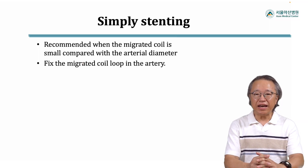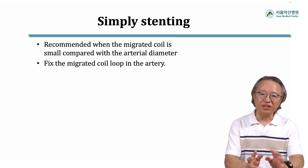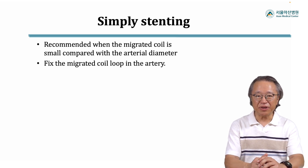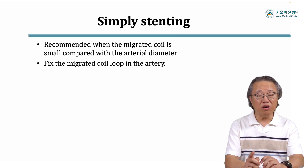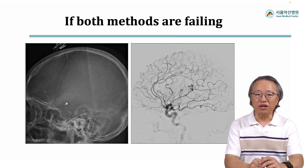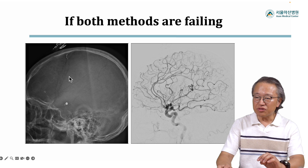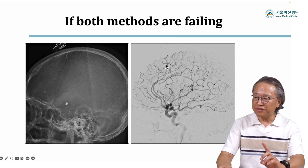Contrary to our expectations, retrieving the migrated coil is quite challenging in most cases. So fixing the coil simply by placing a low-profile self-expanding stent would be the most effective and safe solution, especially when the coil has a small volume. If retrieval and stenting did not go well, consider pushing the coil into a peripheral, less eloquent cortical artery. In this case where the migrated coil flowed distally, I intentionally pushed the migrated coil loop far distally to the less eloquent cortical artery level, leaving no significant flow abnormality on control angiography.